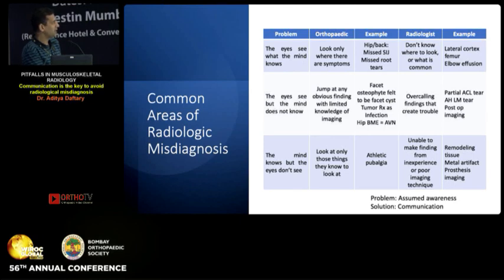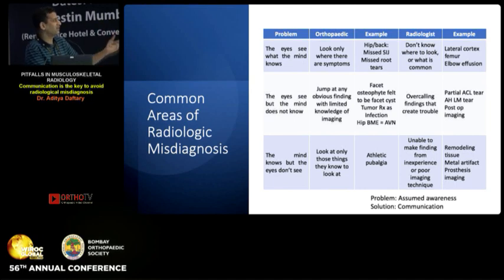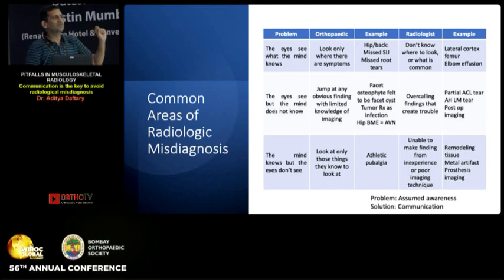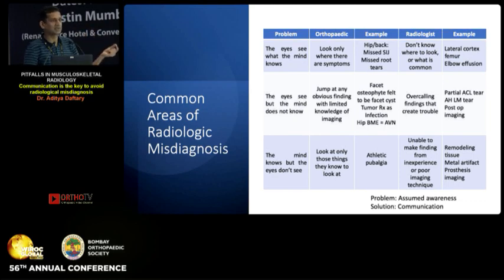'The mind knows but the eyes don't see' — we only look at things we know how to look at, so we miss areas we're supposed to examine, or we don't know what the disease should look like, and we're unable to make a finding from inexperience or poor imaging technique. One key feature for post-operative imaging specifically: there is only one important question to ask a surgeon — is this your surgery or is this from somewhere else? Once you have that, everything else falls into place.